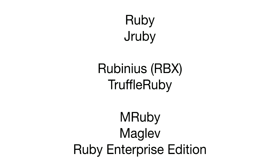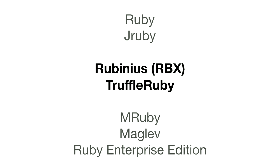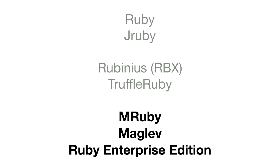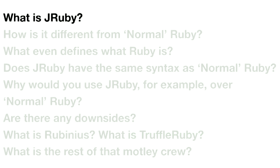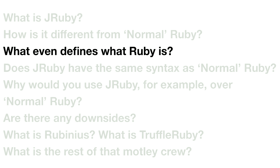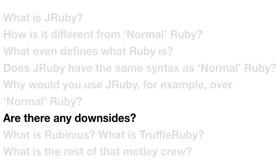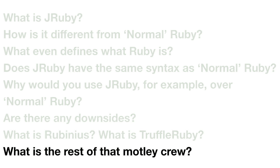So first up, here are the types of Ruby that were returned to me. We've got JRuby and Ruby — we're going to spend most of our time tackling the first two and the difference between them. Then we've got Rubinius and TruffleRuby — we're going to briefly glance at those. And then we've got mruby, Maglev, and Ruby Enterprise Edition — these are going to get a one-liner just so you understand where they are. This is going to be the structure of the talk: What is JRuby? How is it different from normal Ruby? What even defines what Ruby is? Does JRuby have the same syntax? Why would you use JRuby? Are there any downsides? What is Rubinius and TruffleRuby? And what's the rest of that motley crew?